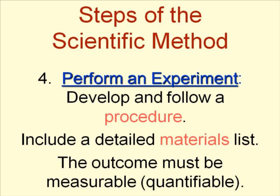The next step is to perform an experiment. You're going to develop and follow a procedure, which includes a detailed materials list. An important point here: the outcome must be measurable. You don't want results based on someone's opinion, because a key goal of the scientific method is for someone else to be able to repeat your experiment and get the same results. For example, saying 'the plant was large' is subjective — what's large? It needs to be something you can actually measure.